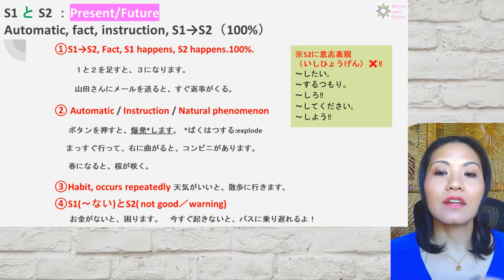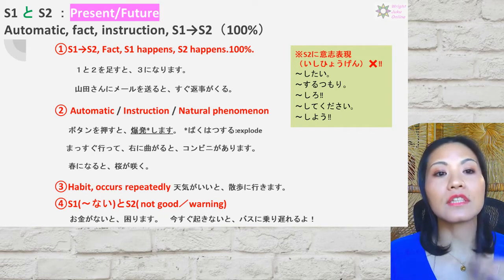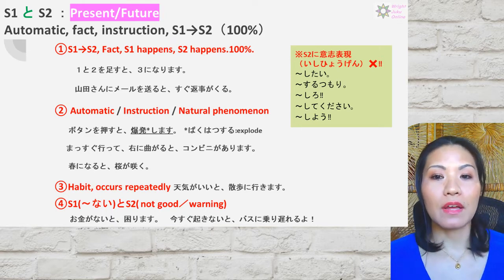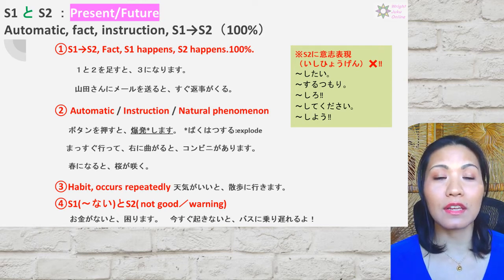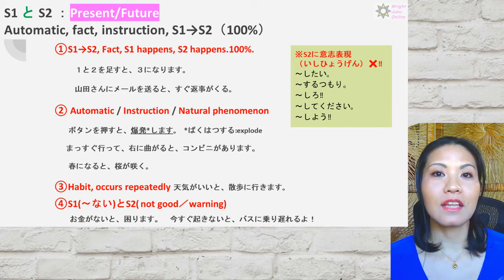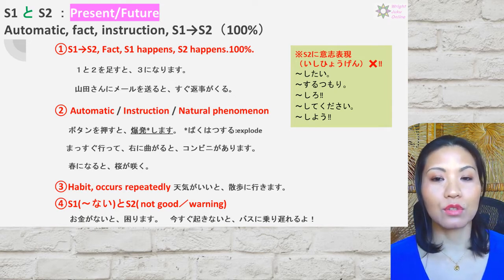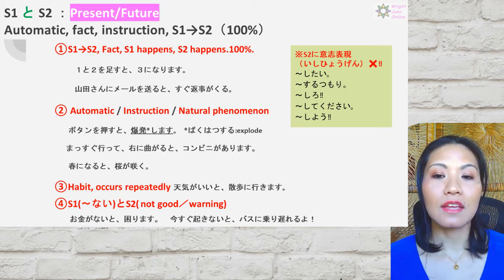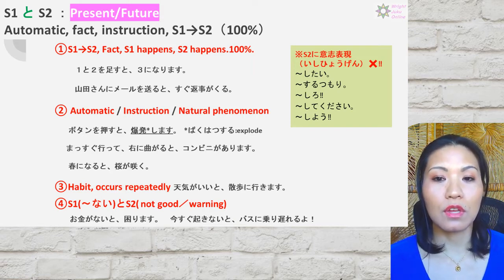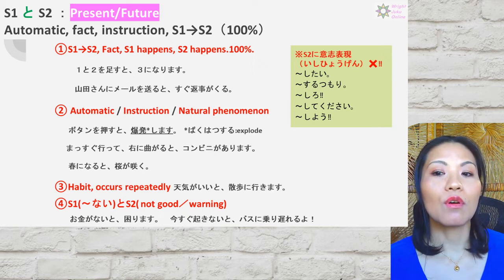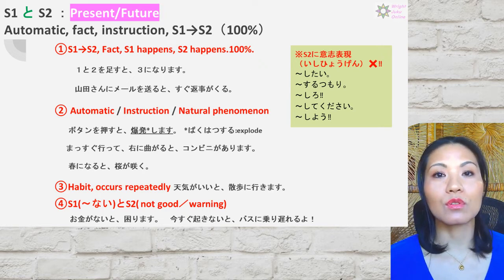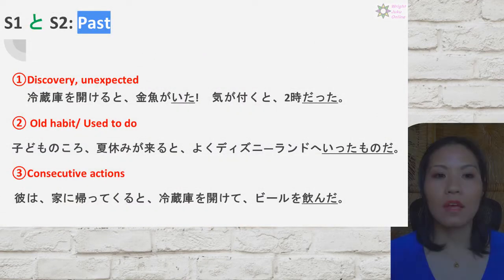Number three is habit that occurs repeatedly: 天気がいいと散歩に行きます — that's good for と. Number four: when you use negative in sentence one, sentence two will be a warning or not-good outcome — お金がないと困ります and 今すぐ起きないとバスに乗り遅れるよ are both good examples for と.